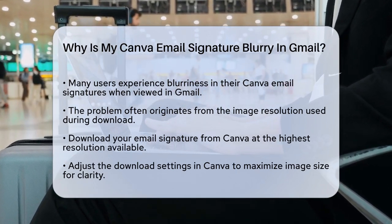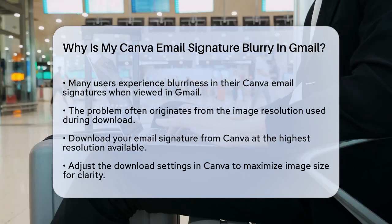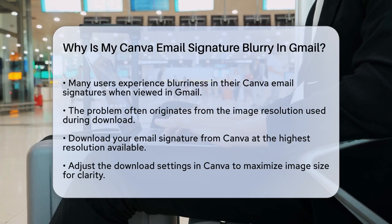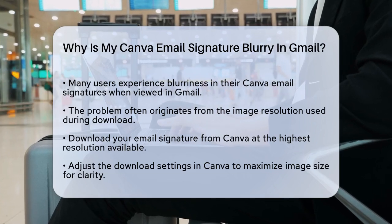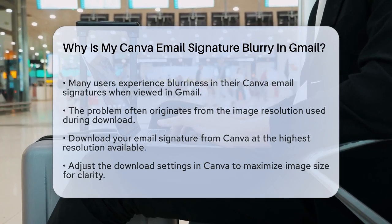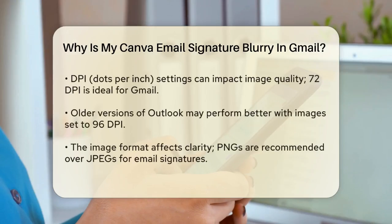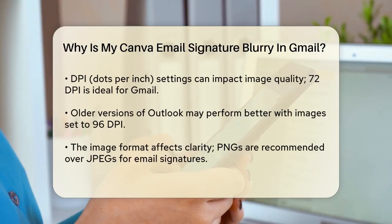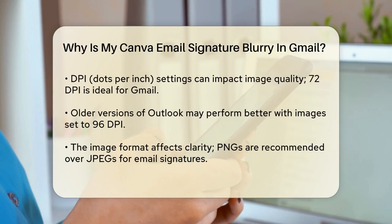In Canva, go to your download settings and adjust the size to the maximum available. This might make the file larger, but it will help keep your image clear.